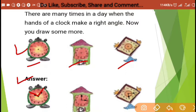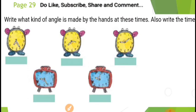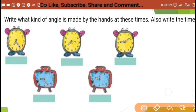For the second one, this is the right angle — you can see the time as well. For the third one, this is the right angle. You can make it on your own; it's your choice. Now go to page number 29.